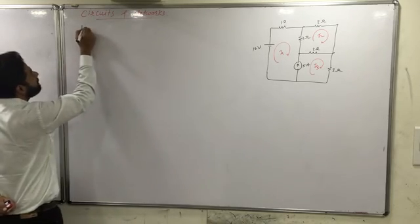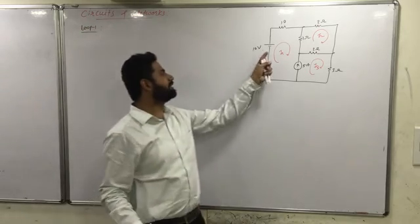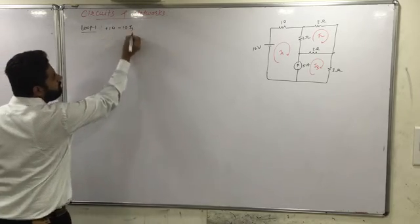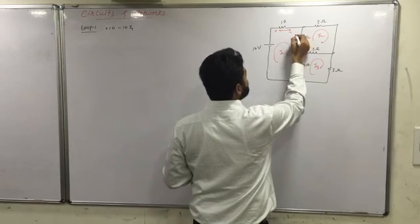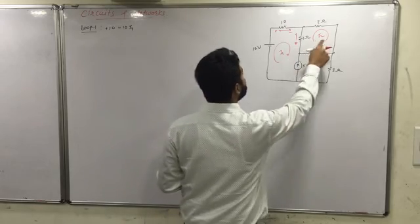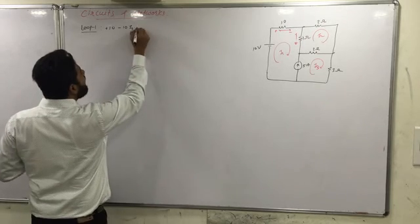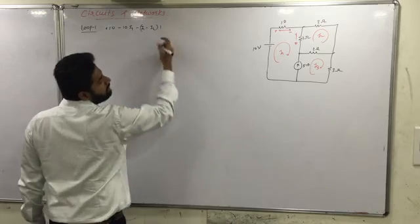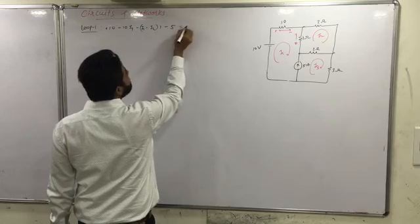The very first mistake — when we apply loop number 1, we start it this way: rise of 10 volts, minus 10 into I1. This is the fault. It's plus-minus; I am covering loop number 1, so I1 is the maximum current. It's I1 minus I2. So I can say it's minus (I1 minus I2) into 1, and then one student has written minus 5 which is equal to 0.